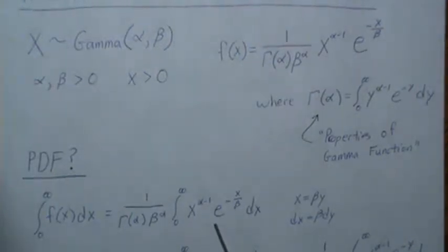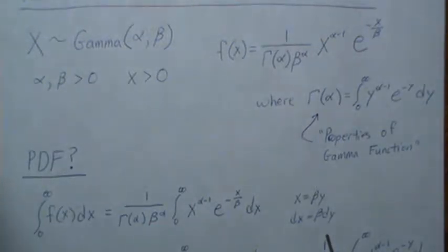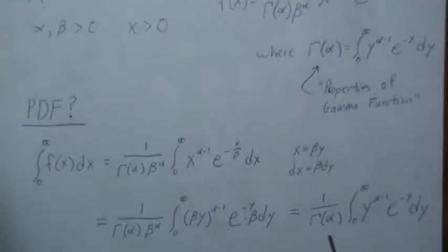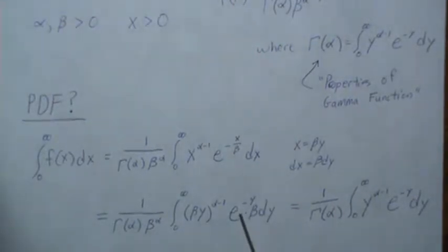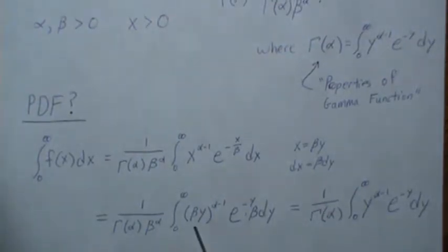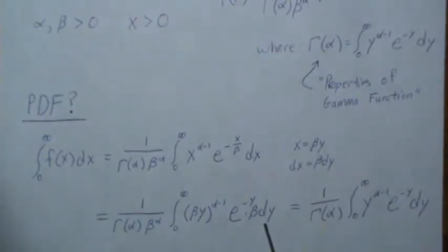Now let's do a substitution of X equals beta Y, so then DX is equal to beta DY. We plug that back into our equation, so here we're just left with e to the minus Y, and here we're left with beta Y raised to the alpha minus 1 power, and this is our DX.